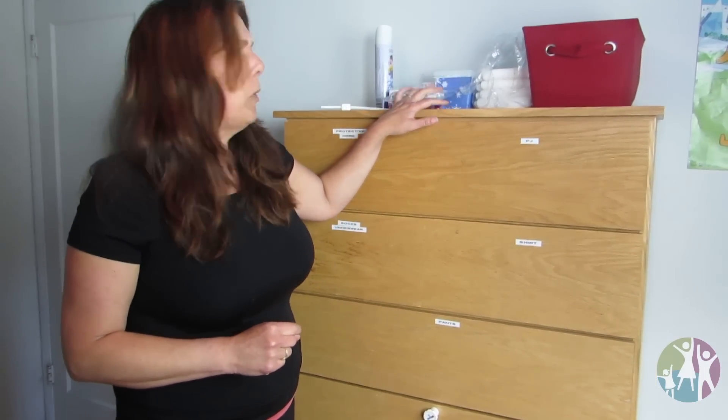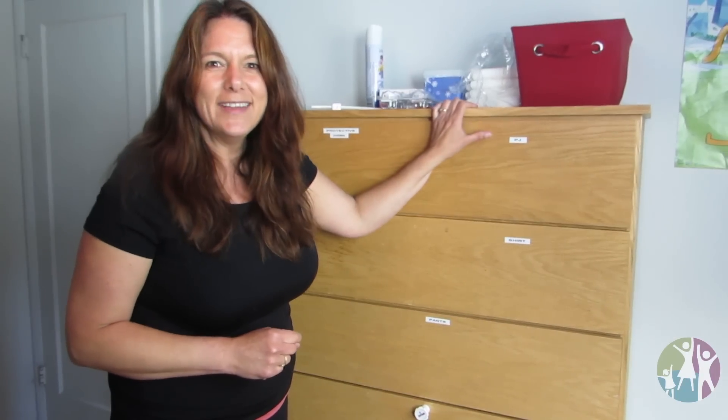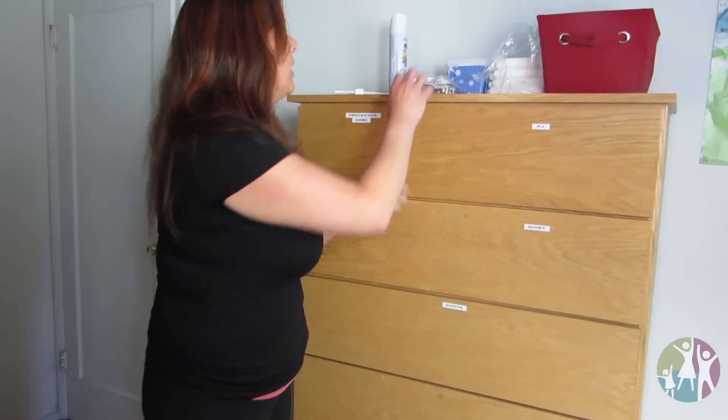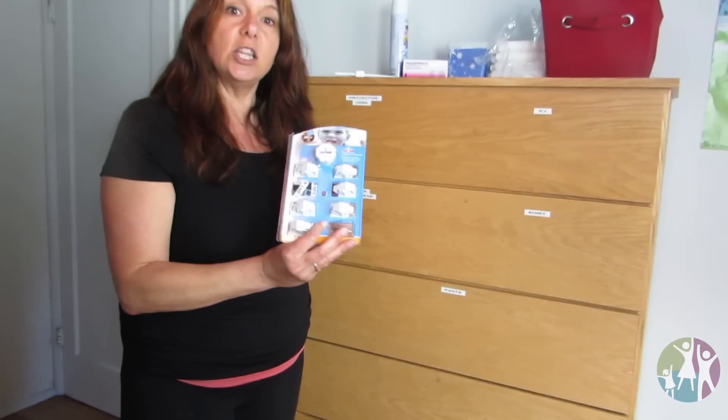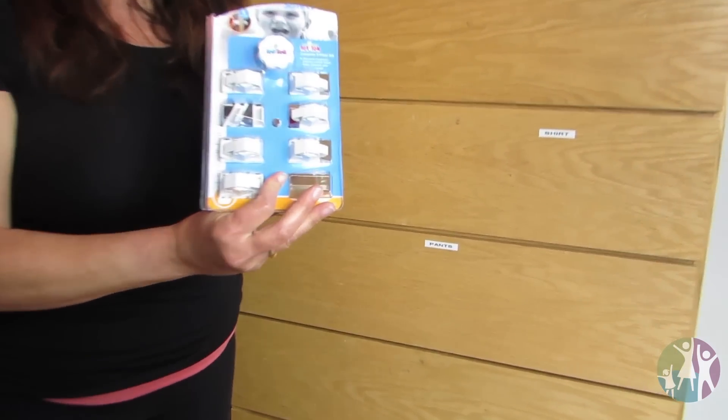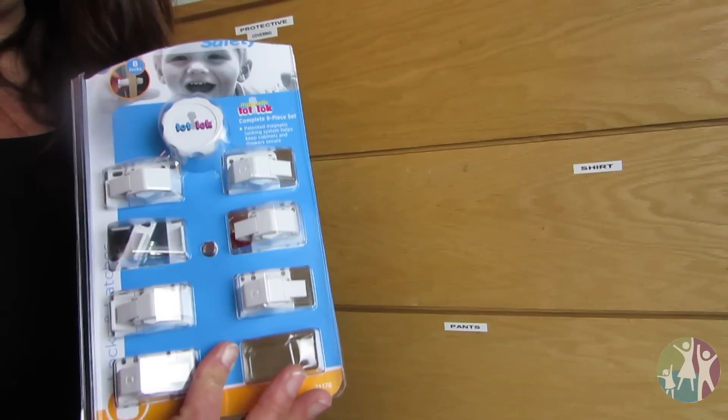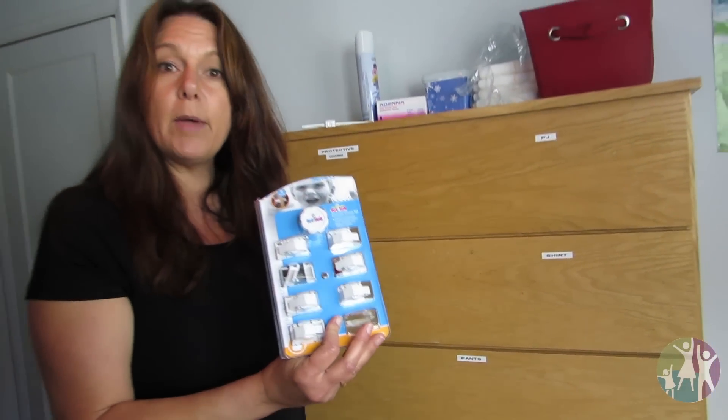This is a dresser that we actually had made that's really heavy so Curtis couldn't pull it down on himself. What this guy did though is he actually installed these wonderful locks right here. They're called Todd Locks. You could buy them on Amazon, Lowe's, or Home Depot in the Kids Safety Center area.